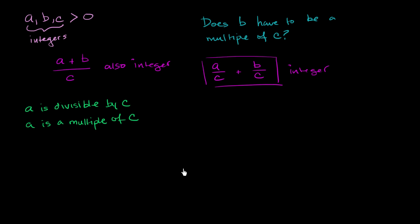Now, what do we know about these parts? Well, a over c, this is a divided by c. We know that a is divisible by c. We know that a is a multiple of c. So a divided by c, this is going to be an integer. So this information right over here tells us that this thing right over here, that a divided by c, is going to be an integer. This is going to be an integer.